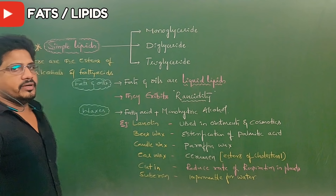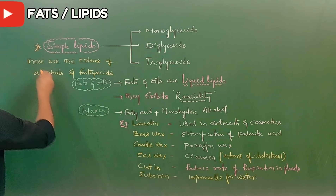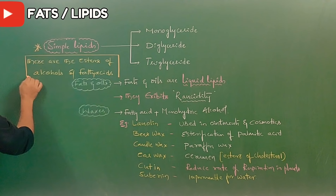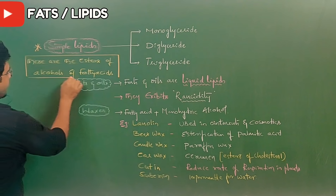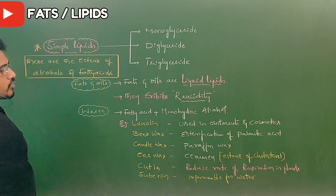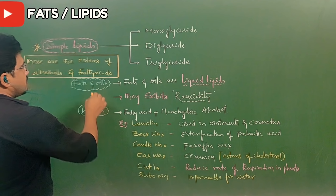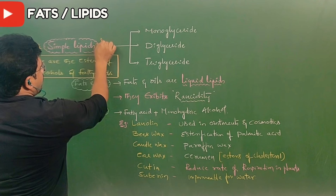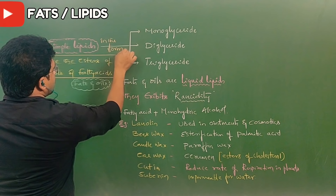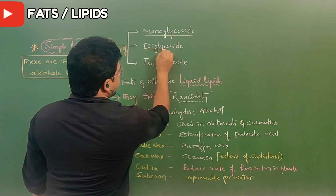Now let us discuss the first category of lipids: simple lipids. Simple lipids are esters of alcohols and fatty acids, mainly glycerol. That is why simple lipids are also called neutral lipids. They exist in the forms of monoglyceride, diglyceride, and triglyceride.